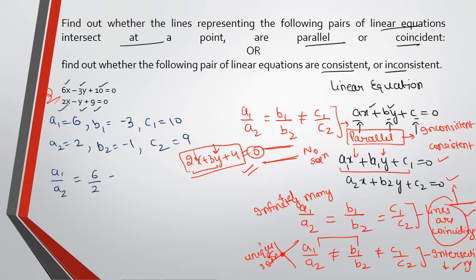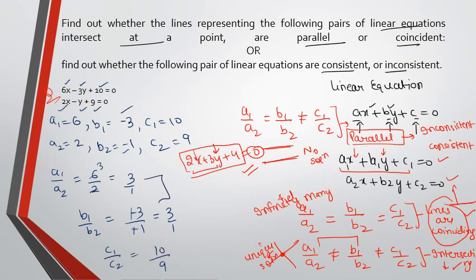a1 upon a2 is 2 times 3, 6, 3 ratio 1. Then b1 upon b2 is minus 3 by minus 1. So minus is cancelled with minus. It is 3 by 1 again. And c1 by c2 is 10 by 9. So you can see first two ratios are equal like this. And third one is not equal. So lines are parallel. These pair.